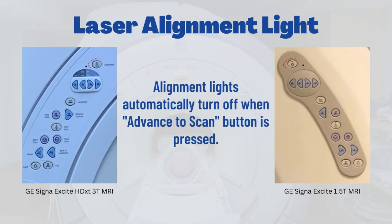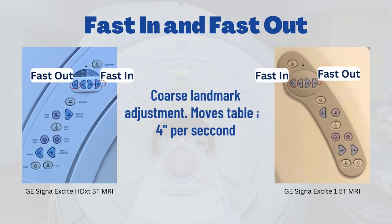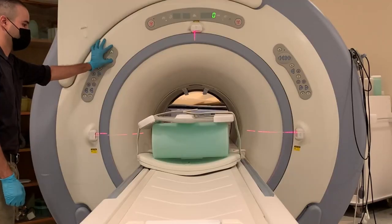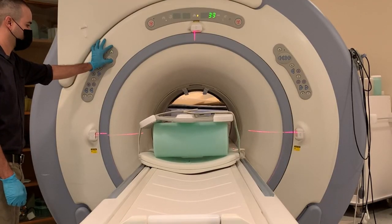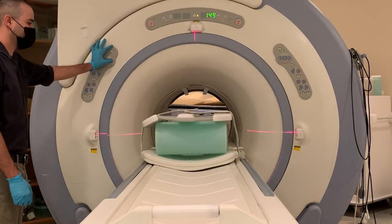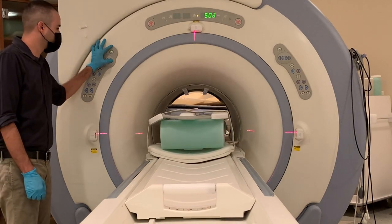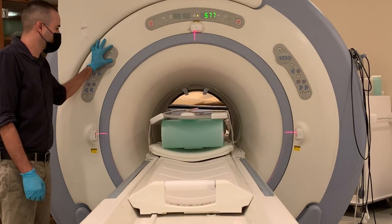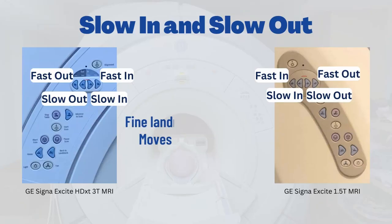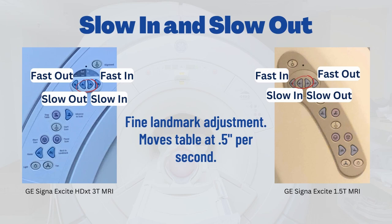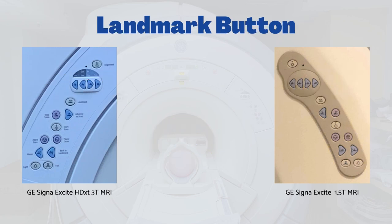Directly below the laser alignment button are the cradle directional controls. Fast in and fast out buttons move the patient into and out of the magnet at a rate of 4 inches per second. The slow in and slow out buttons move the patient table at a rate of half an inch per second for precision landmarking.